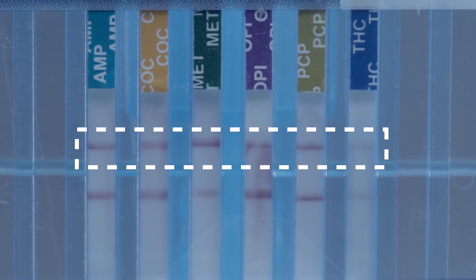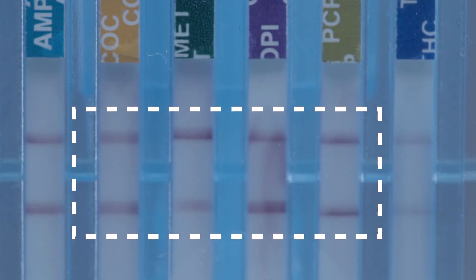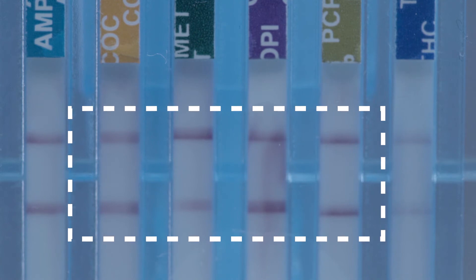Make sure that the top control line is visible for all test strips; otherwise, the test is invalid and the results must not be used. Two lines appearing, as seen in this example, show a negative result.